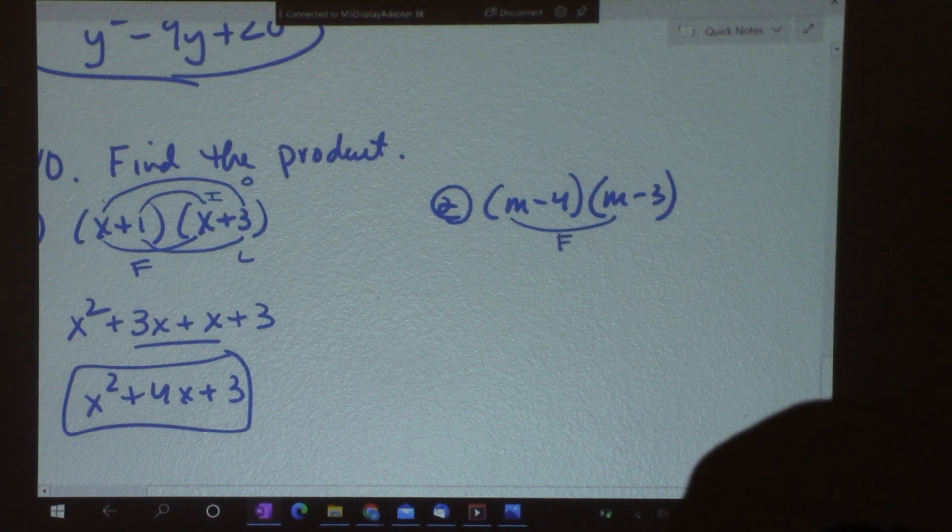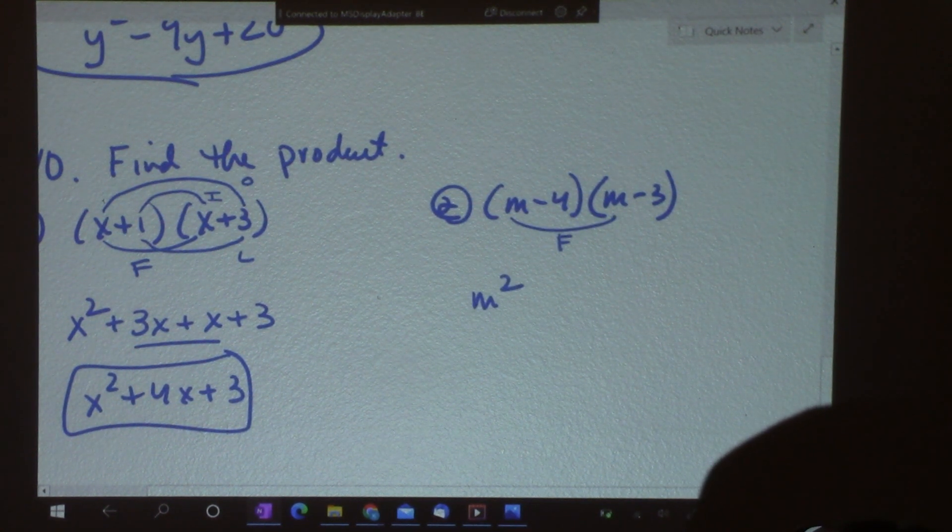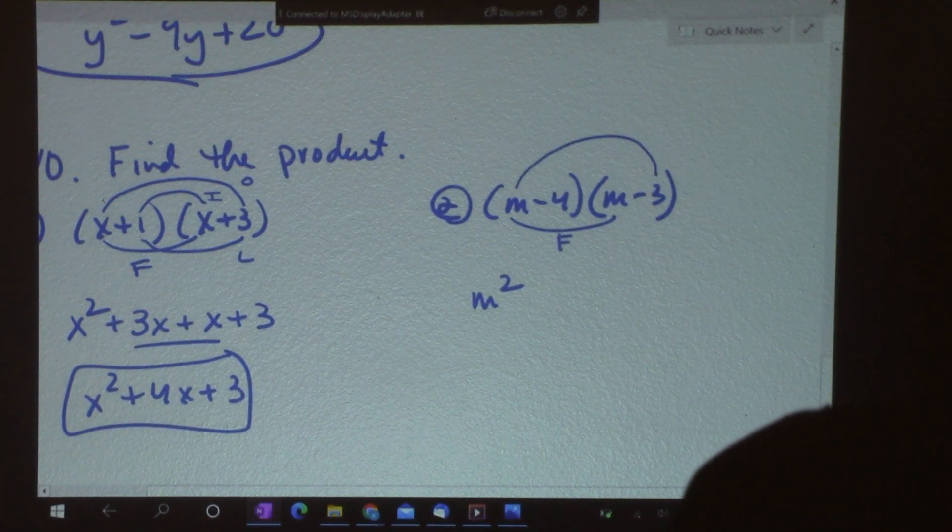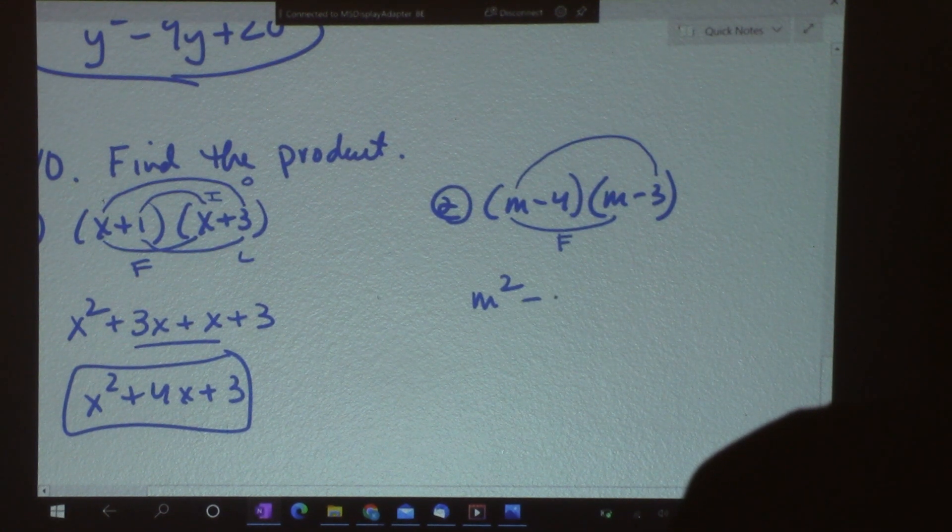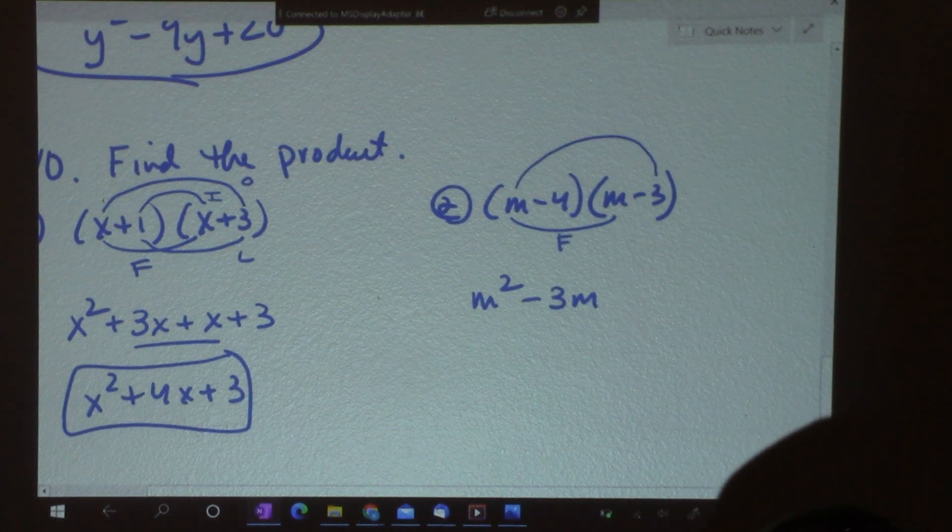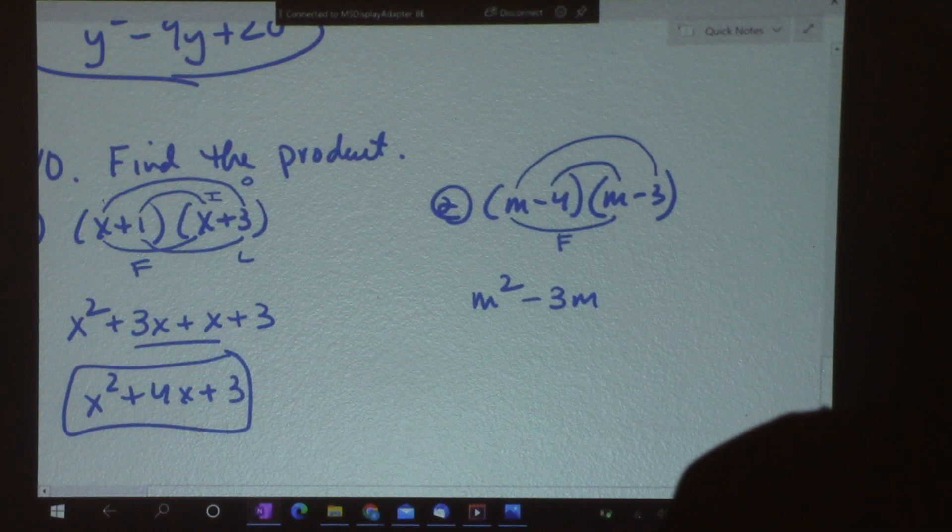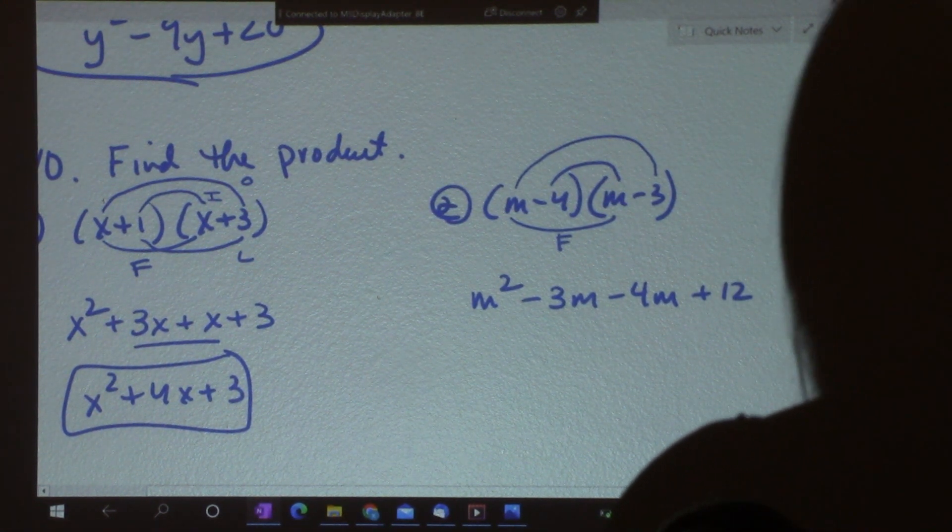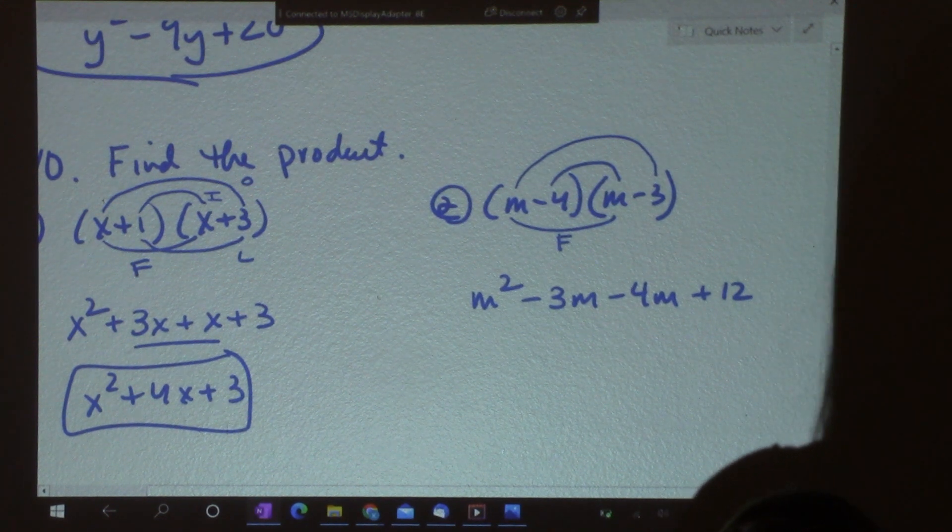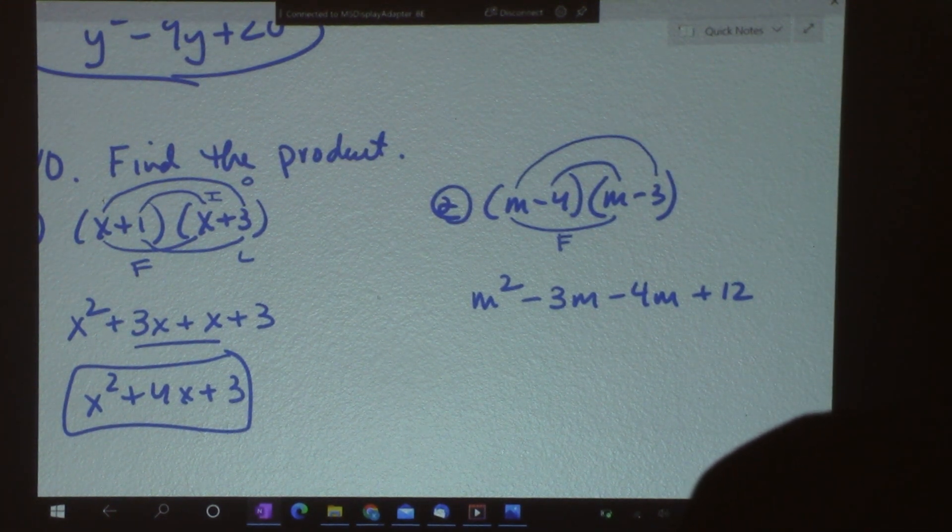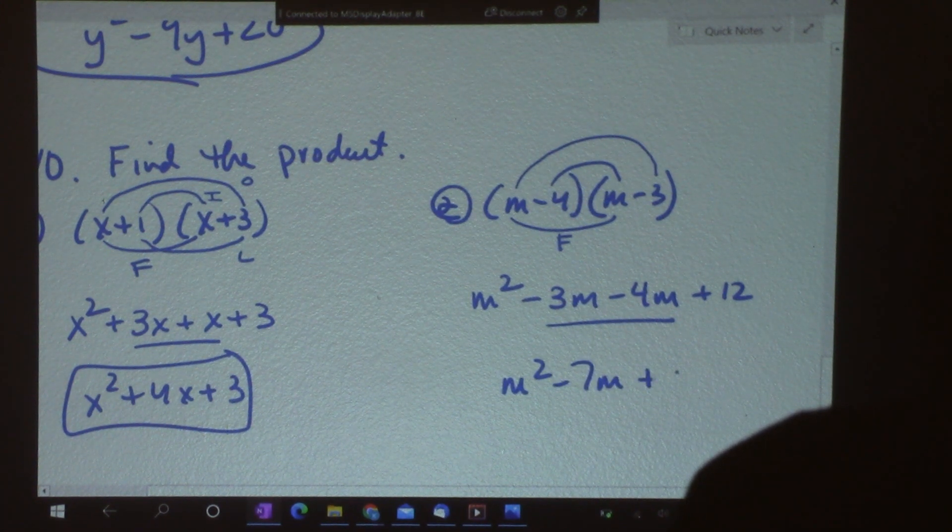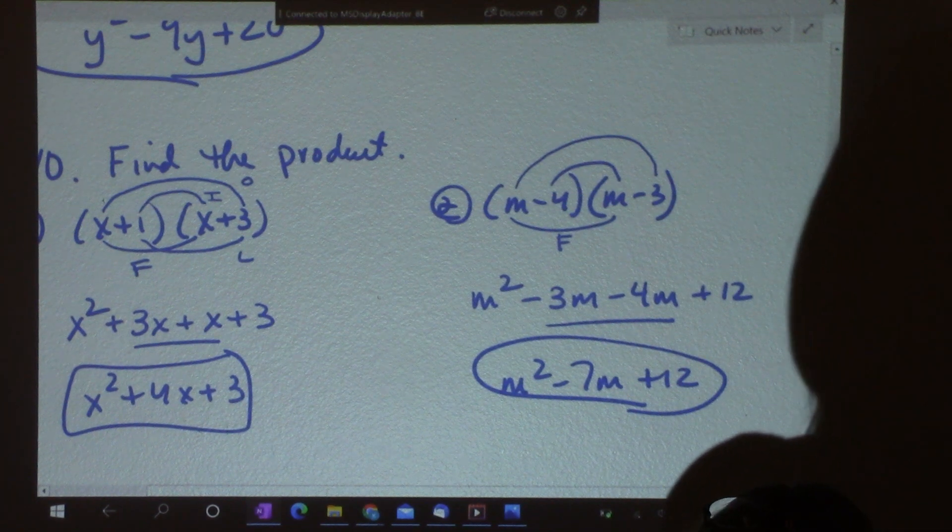And number 2. m times m is m squared for first. Outside. The two terms on the outside. m times negative 3 is negative 3m. And then, in the middle, negative 4m. And negative 4 times negative 3 is 12. So, let's add these in the middle together. So, I get m squared minus 7m plus 12.